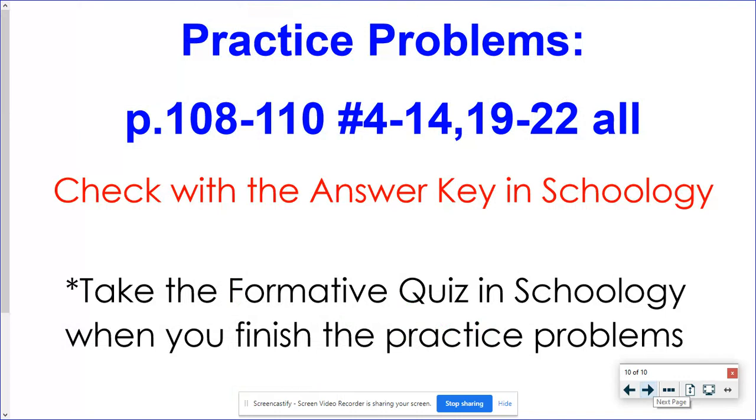Today's practice problems are from your book. So you'll have to go in through Clever or look at the pages that are downloaded in Schoology. We're going to go on page 108. It does not go to 110. I think it only stops at 109. Numbers 4 through 14. This is supposed to be evens. And then 19 through 22, all. So 4 through 14 is only the evens, not all of them. And then make sure you check the answers with the answer key in Schoology. When you're all done with that, there is a short formative quiz in Schoology. Let me know if you have any questions.